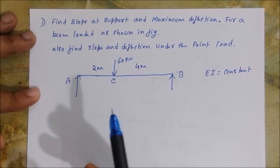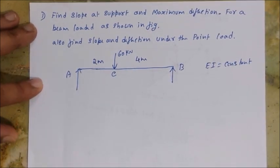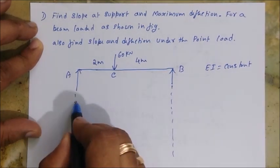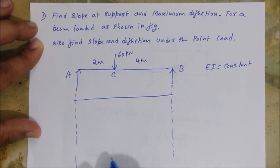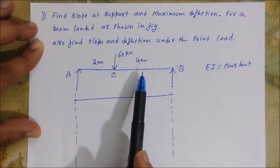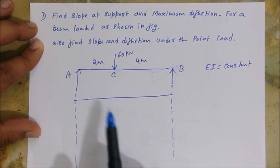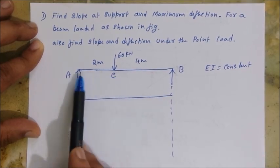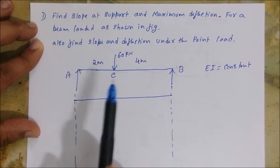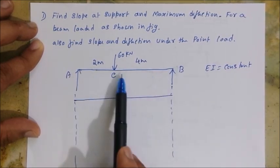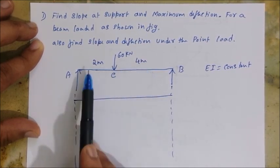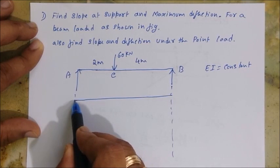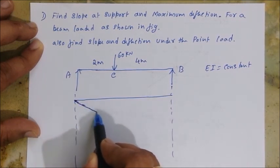We'll use a slightly different procedure here. First, draw the elastic curve. Now, where do you think the maximum deflection will occur — in region AC or in region CB? The maximum deflection will occur in region CB, not in region AB. You need to look for the largest deflection in the shortest panel. Immediately after C, you will get the maximum deflection.